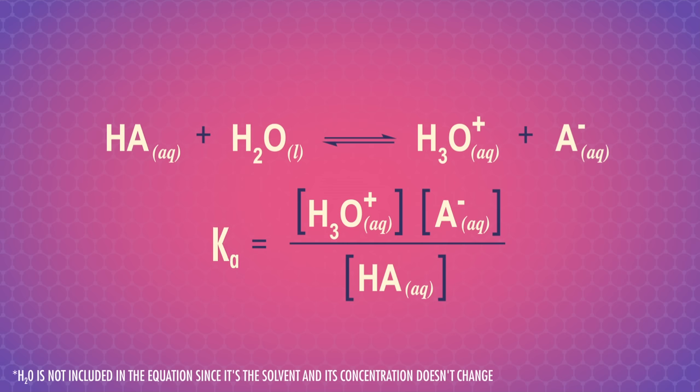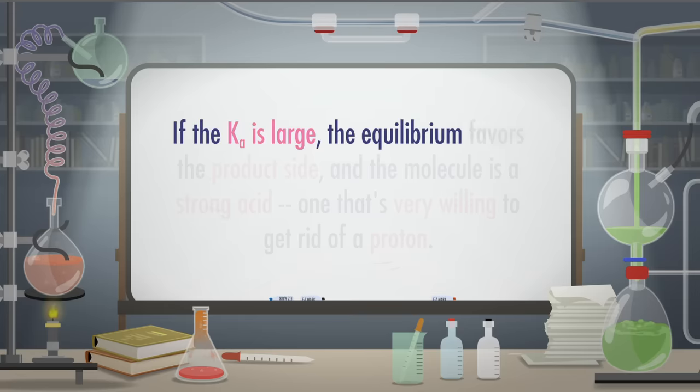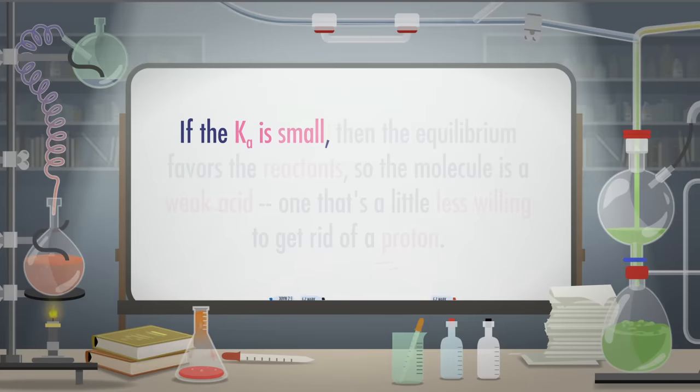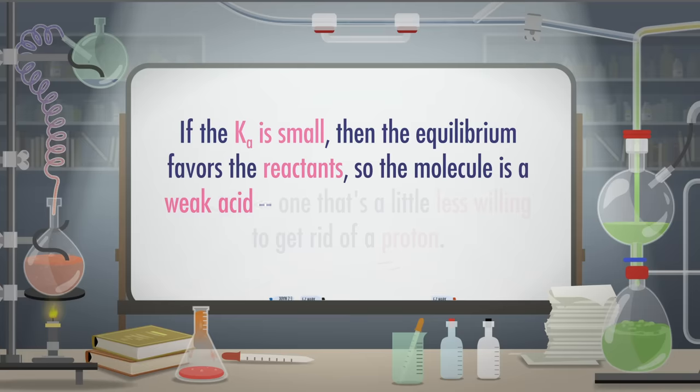The size of the Ka tells us if we have more products or reactants. If the Ka is large, the equilibrium favors the product side, and the molecule is a strong acid – one that's very willing to get rid of a proton. If the Ka is small, then the equilibrium favors the reactants, so the molecule is a weak acid – one that's a little less willing to get rid of a proton.